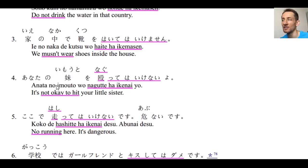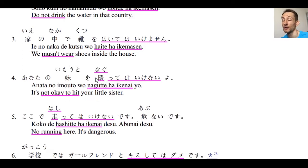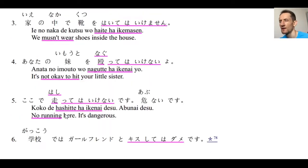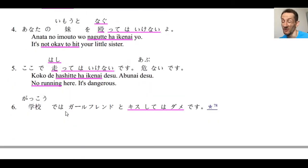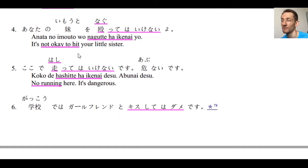Number four: Anata no imouto wo nagutte wa ikenai yo — it's not okay to hit your little sister. Naguru means to hit; nagutte wa ikenai means you must not hit. Number five: Koko de hashitte wa ikenai desu, abunai desu — no running here, it's dangerous. Maybe at a pool: hashitte wa ikenai.